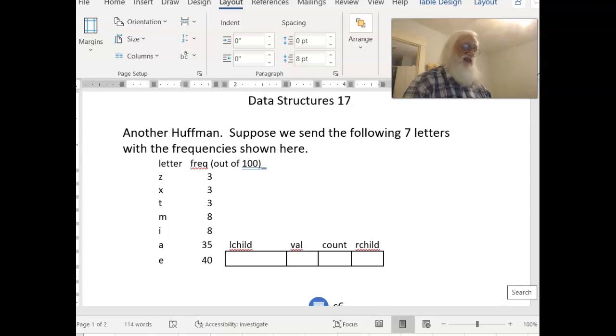The example we're given is that we are sending out a message, so we're only using seven different letters. The letters are Z, X, T, M, I, A, and E. We've done a careful check of our messages, and on average, if you look at 100 letters, only three of them are Z, only three of them are X, 40 of them are E.